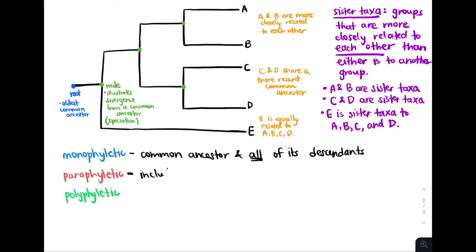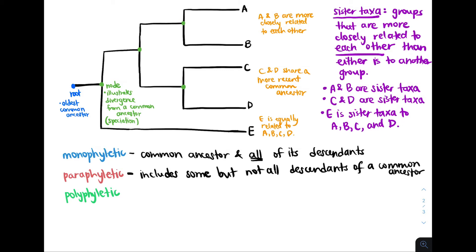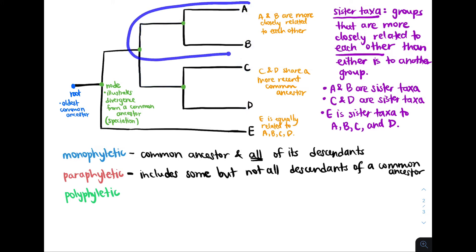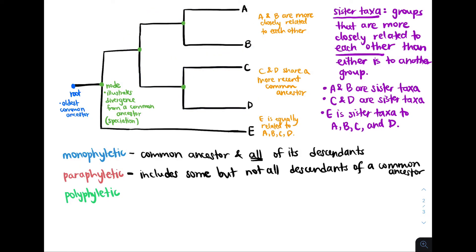Paraphyletic groups are groups that include some, but not all, of the descendants of a common ancestor. For example, taking a look at a node that branches into A and B — species A and that common ancestor would be a paraphyletic group because it does not include species B, which is also a descendant of that common ancestor. Similarly, if we chose to group only species A and B from a node that also diverges into C and D, and exclude C and D, then this would be a paraphyletic group.